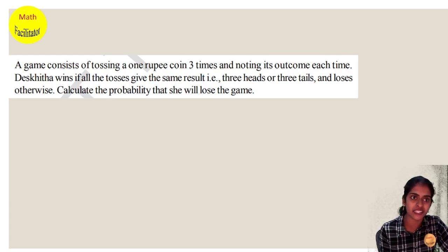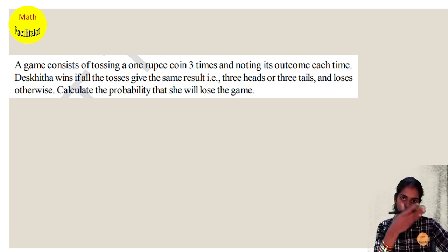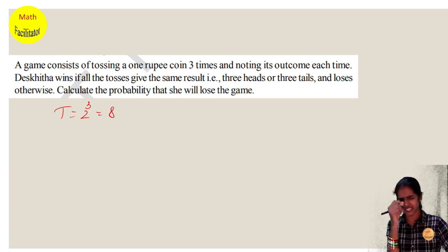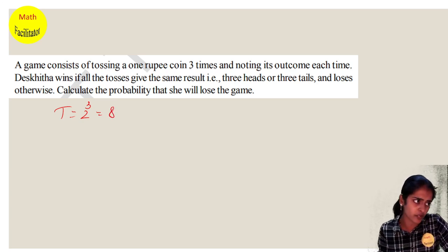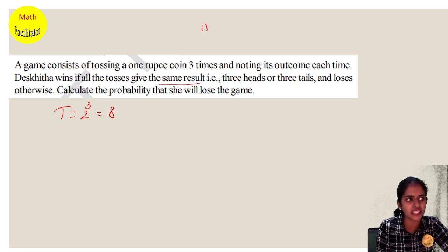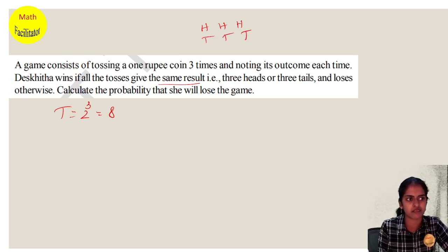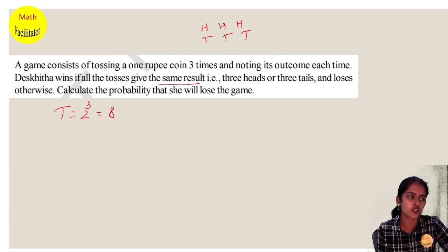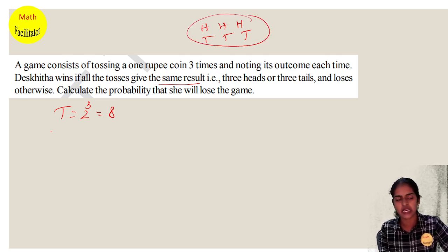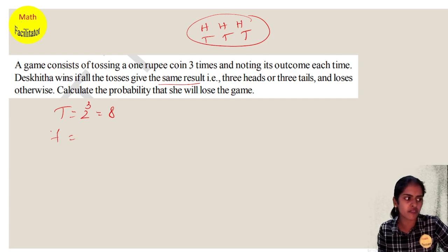Coin toss problem: Three coins are tossed. One coin has two outcomes—this clear explanation was already done—eight total outcomes. Dikshita wins if the result is the same: either head-head-head or tail-tail-tail, and loses otherwise. What is the probability that she will lose? Out of eight outcomes, two are wins, so six outcomes are losses. Your favorable outcomes are six, so 6/8, which simplifies to 3/4.